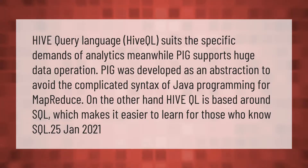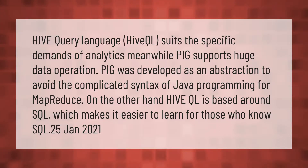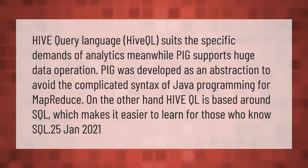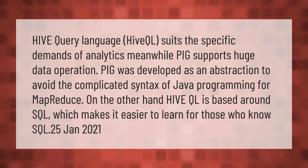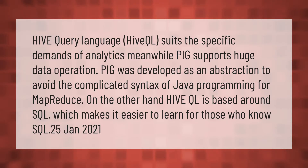Hive Query Language (HiveQL) suits the specific demands of analytics, meanwhile Pig supports huge data operations. Pig was developed as an abstraction to avoid the complicated syntax of Java programming for MapReduce. On the other hand, HiveQL is based around SQL, which makes it easier to learn for those who already know SQL.